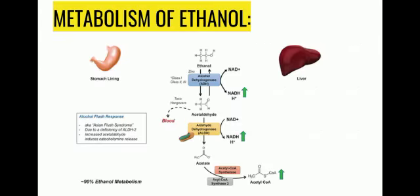Here, the metabolism of ethanol in the body is shown. Ethanol enters the body and alcohol dehydrogenase acts on it, converting it into acetaldehyde. Acetaldehyde may be secreted into blood and causes toxic hangovers, but if it is broken down into acetate by acetaldehyde dehydrogenase, it is further broken down into acetyl-CoA, which is then released.